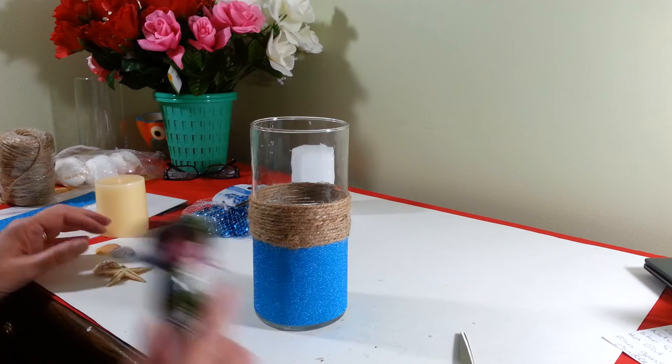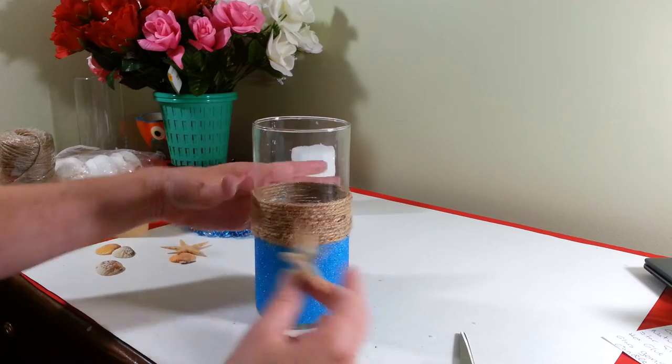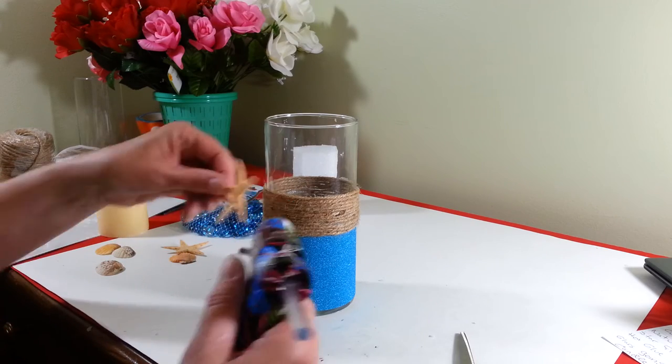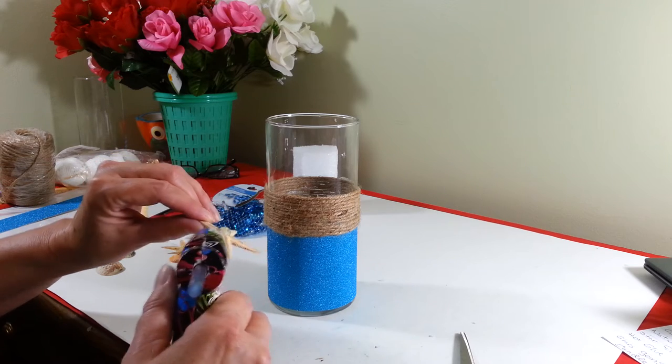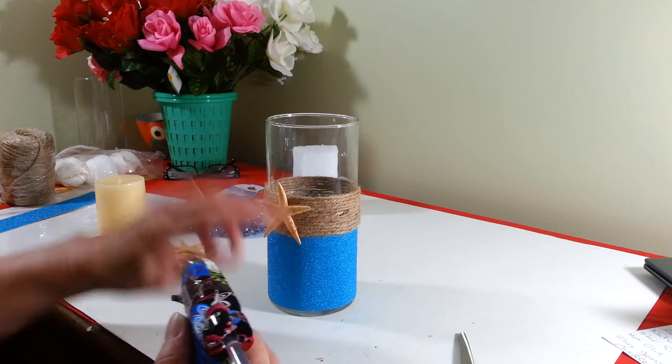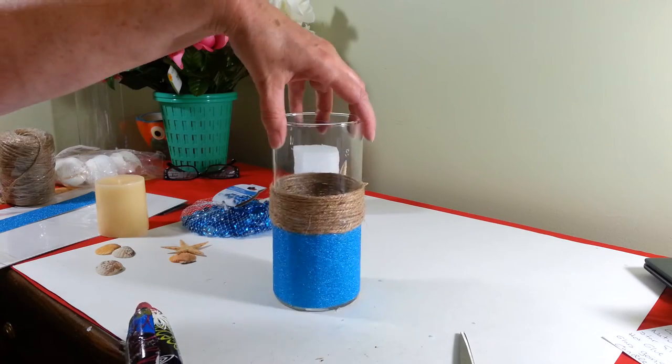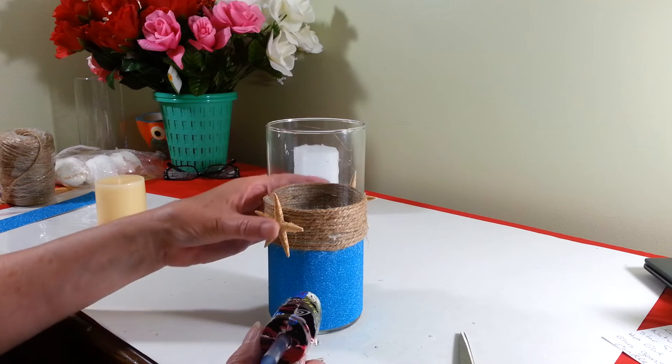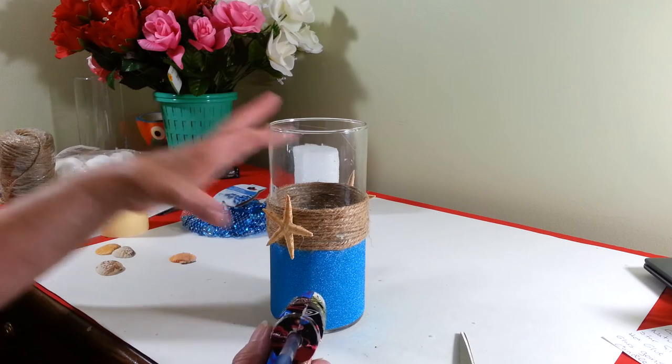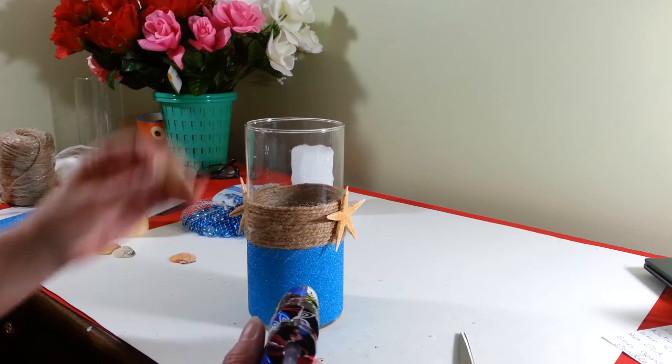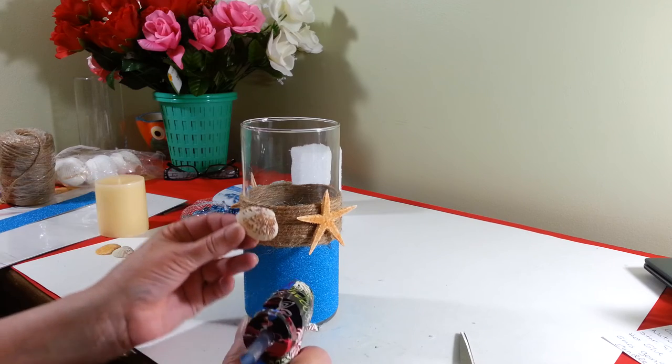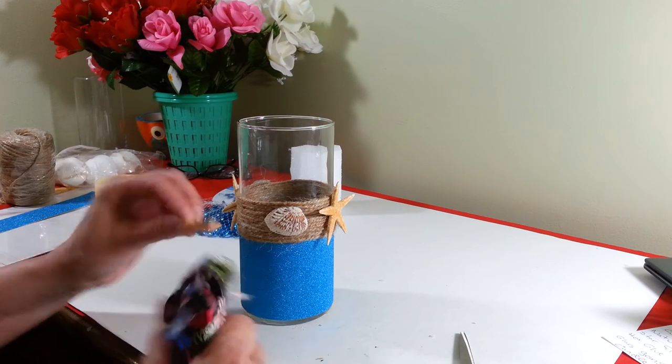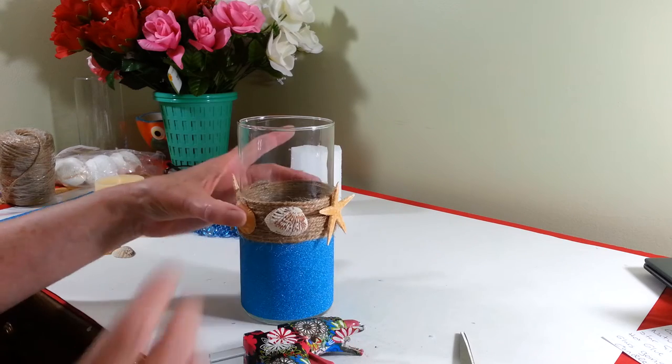So, now I'm going to attach my shells right in the front. I think I want them this way because I like the color better on this side. So, I'm going to attach that with some hot glue. And I want one of these in the back. And then I'm just going to add a couple of these shells. And then we're going to do the same thing on the other side.